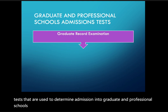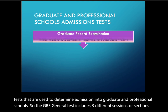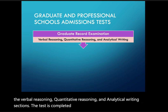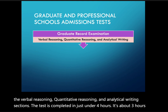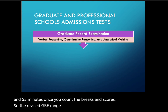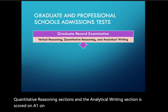The GRE general test includes three different sections: verbal reasoning, quantitative reasoning, and analytical writing. The test is completed in just under four hours — about three hours and 55 minutes once you count the breaks. Scores for the revised GRE range from 130 to 170 for the verbal and quantitative reasoning sections, and the analytical writing section is scored on a zero to six point scale.